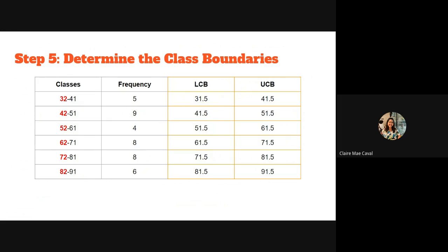So the lower class boundaries are 31.5, 41.5, 51.5, 61.5, 71.5, and 81.5. The upper class boundaries are 41.5, 51.5, 61.5, 71.5, 81.5, and 91.5. In summary: for LCB, subtract 0.5 from the lower limit; for UCB, add 0.5 to the upper limit.